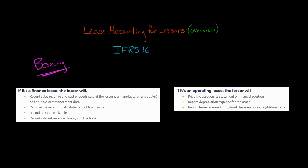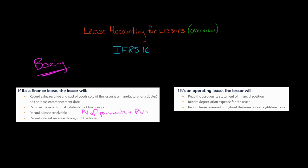The lessor is going to de-recognize the asset from their statement of financial position. So Boeing is leasing out an airplane — that airplane is no longer going to appear on their statement of financial position. But they are also going to be recording an asset: a lease receivable. The lease receivable is going to be the present value of the lease payments plus the present value of the residual value. IFRS 16 also refers to the lease receivable as the net investment in the lease.